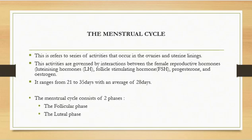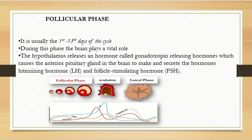This cycle is divided into two main phases: the follicular phase and the luteal phase. These phases are divided by what we call ovulation. Let's talk about them individually. The follicular phase usually starts from the first to the 13th day of the cycle.